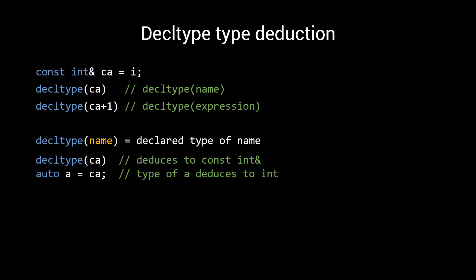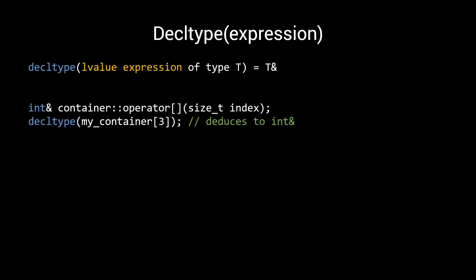In case we use decltype with an expression, there is obviously no declared type that can be used. So here the deduced type depends on the type of expression. When given an lvalue expression of type T, the decltype of that expression is an lvalue reference to T. Often, lvalue expressions are already reference types, such as the return type of the subscript operator. In case where they are not, such as when dealing with built-in arrays, they already act like a reference type. As such, you could say that the decltype tends to act just as expected when dealing with lvalue expressions.